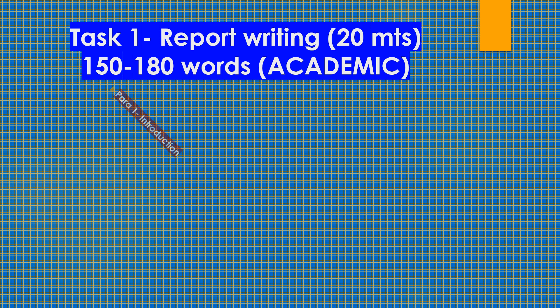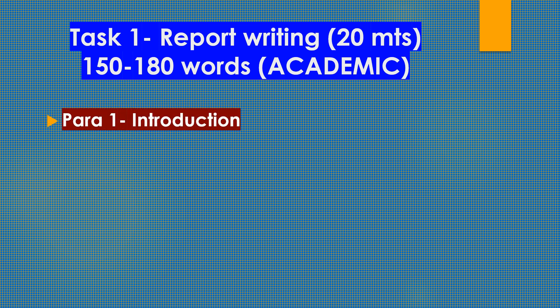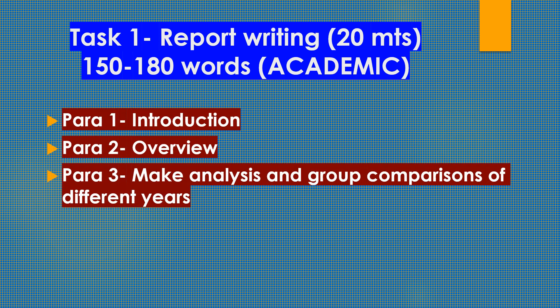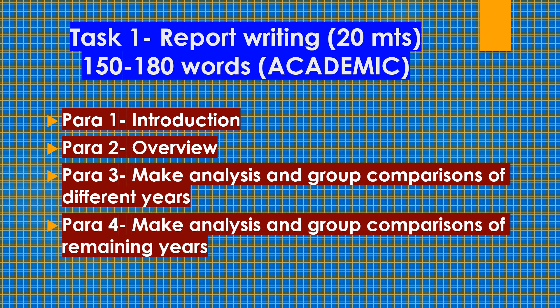Now let's take a look at task 1 report writing: 20 minutes, 150 to 180 words, academic. Overall you should be writing four different paragraphs. Paragraph 1 is an introduction, paragraph 2 is an overview, paragraph 3 is analysis and group comparisons of different tiers, and paragraph 4 is analysis and group comparisons of the remaining years.